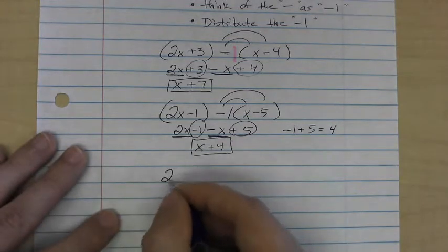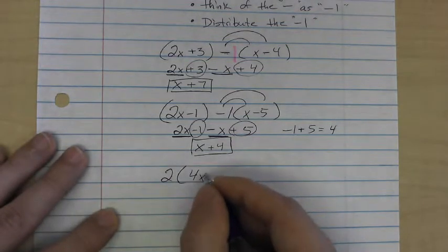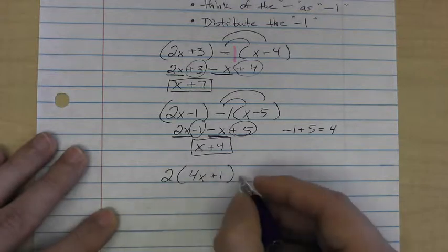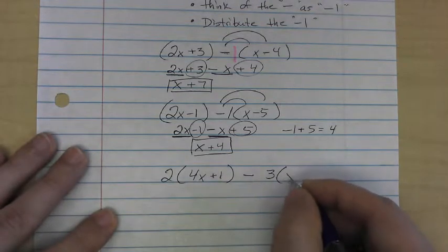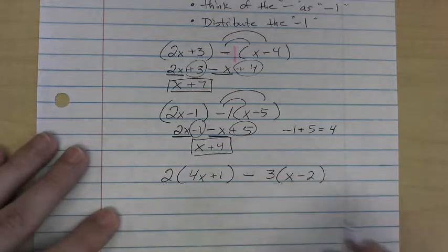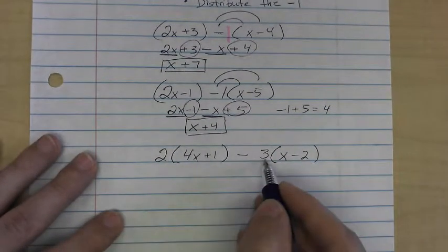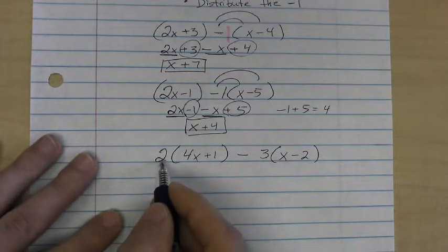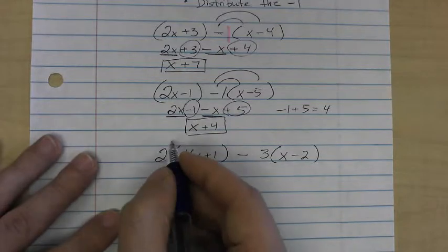One more to try. Let's say we had 2 times 4x plus 1 minus 3 times x minus 2. Now, this time, we don't have a missing spot here, so we're not going to add a 1. There's already a number there, so we're going to use that for distributive property. And we also have a number here this time, so we're going to use that for distributive property as well.